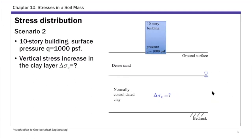What we're going to focus on in this chapter is the second scenario. Again, you have a dense sand layer on top of clay, and if you want to figure out the consolidation settlement in the clay layer, you need to know the stress increase induced by this surface load. In scenario two, we have a 10-story building with a pressure of 1,000 PSF, but the area of this pressure is much smaller. If you're very close to the surface, Delta Sigma Z is approximately equal to 1,000 PSF, but as you increase depth, Delta Sigma Z decreases. In this chapter, we'll learn how to calculate the stress increase due to that surface load.